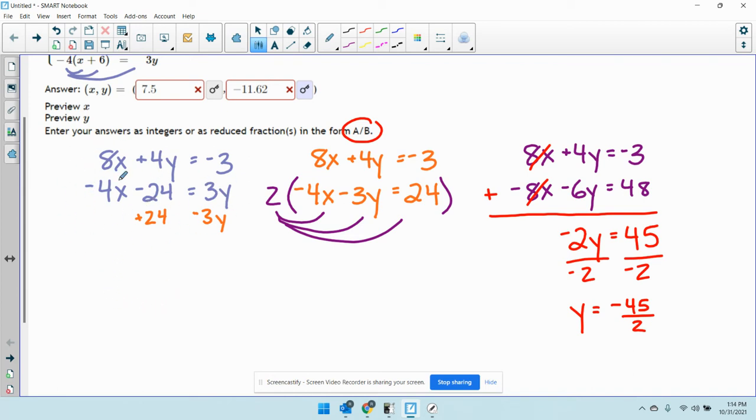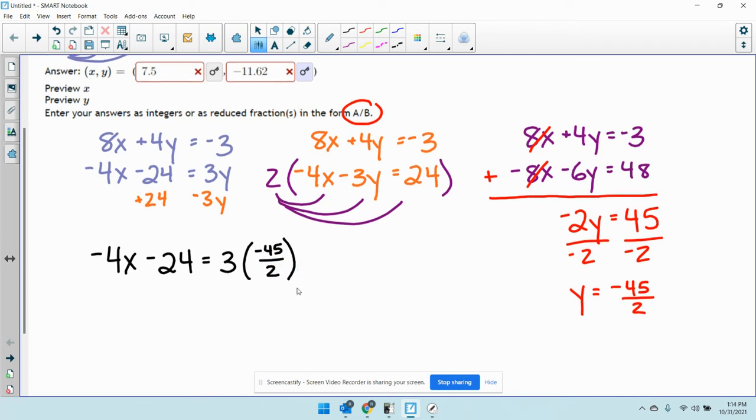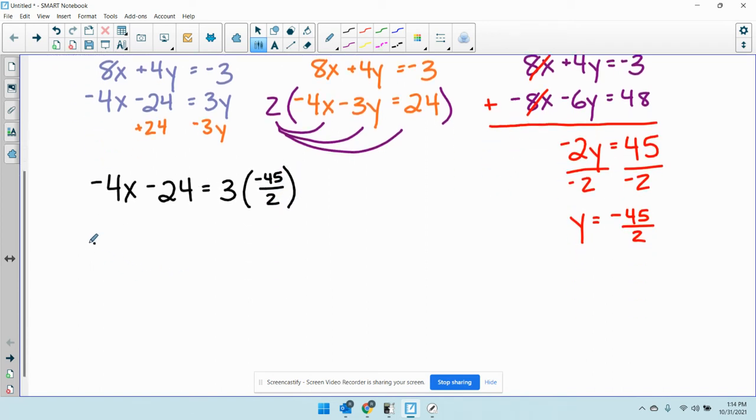I'll substitute it into the second one. It doesn't matter which one you do. I'm going to do the second one. So I have negative 4x minus 24 equals 3y, 3 times negative 45 over 2. So this is negative 4x minus 24 equals negative 135 over 2. Just did 3 times negative 45.